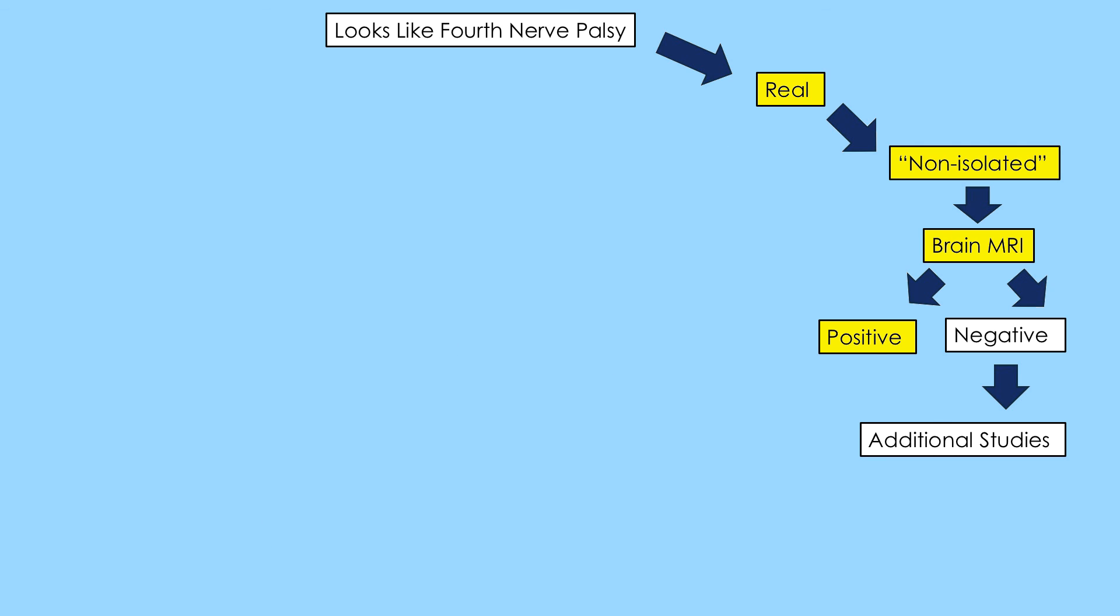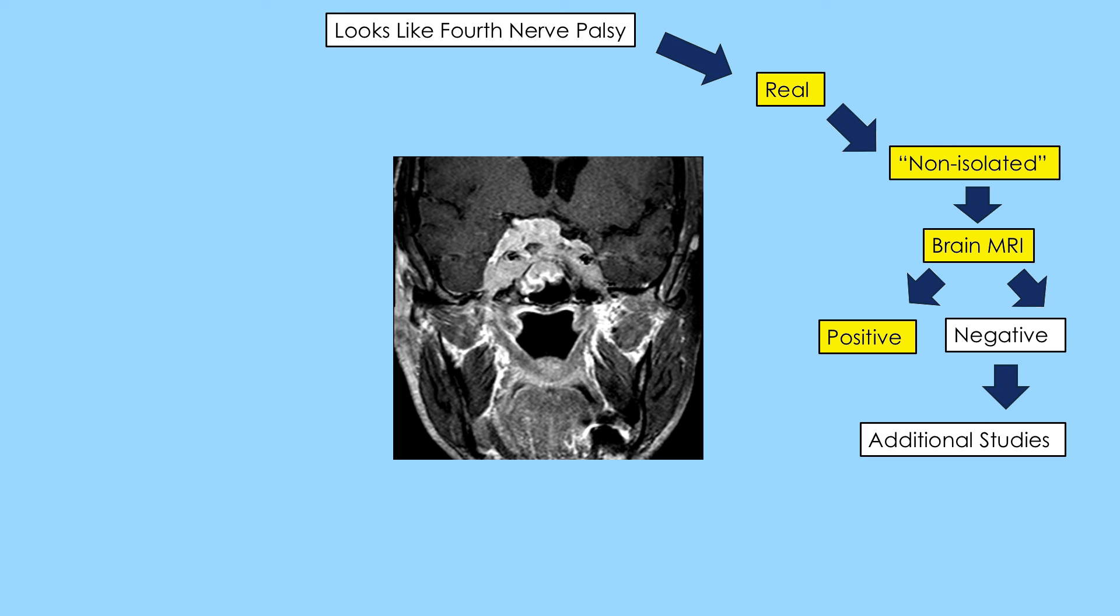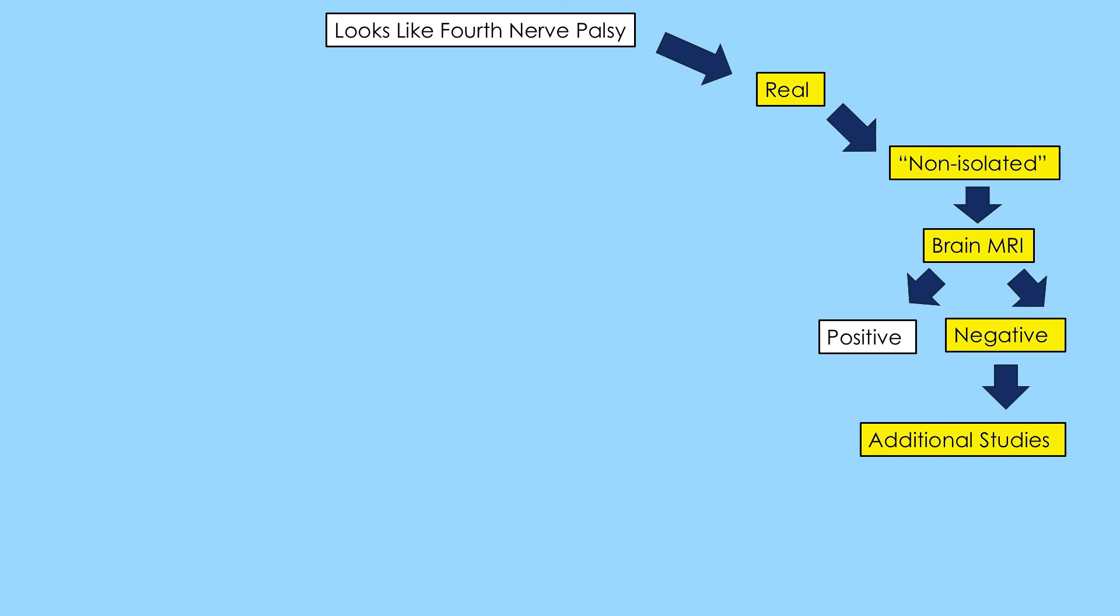Now, if the fourth nerve palsy has other pertinent accompanying features and is therefore non-isolated, you must promptly proceed with brain MRI. If the MRI fails to reveal the lesion, go on to other appropriate studies, including lumbar puncture.